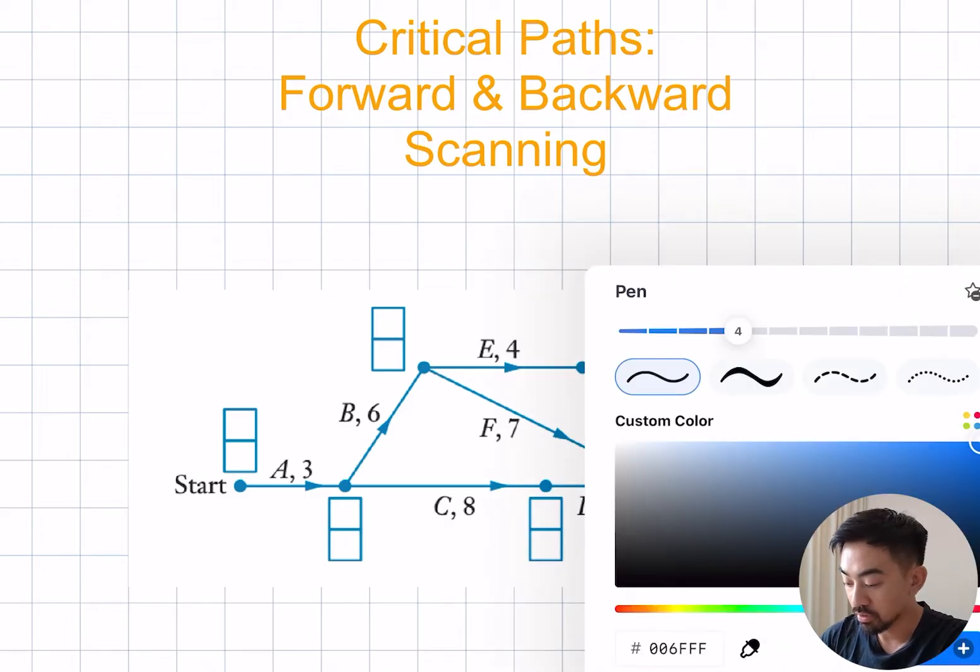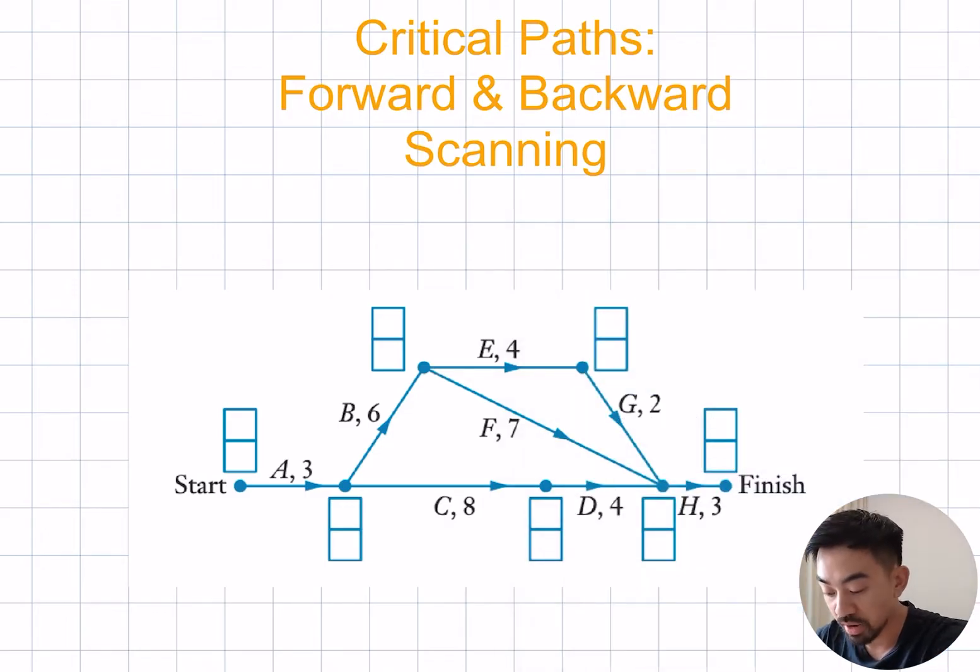So let's have a look at what I've got here. I've got a network diagram and on top of each vertex I've got these boxes. The top box represents the early start time and the bottom box represents the latest start time. So the earliest they can begin and the latest they can begin.